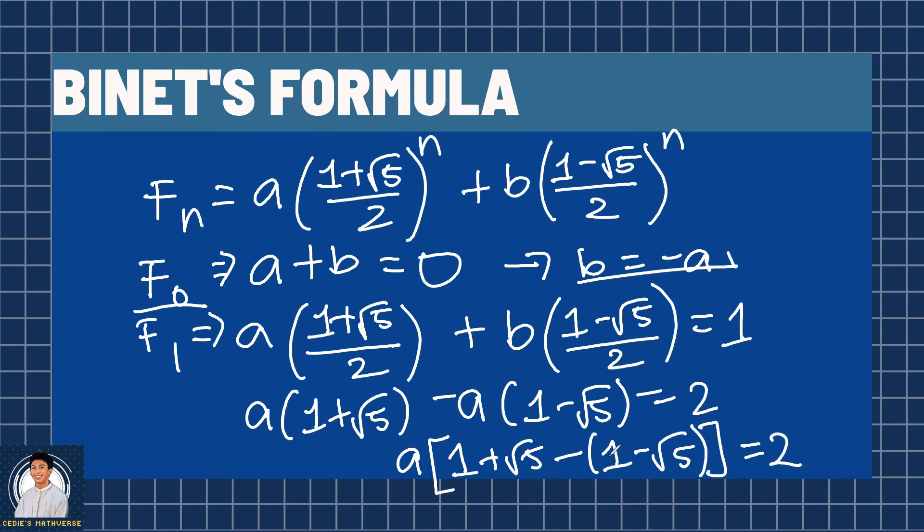We group the a using factoring by grouping. So we have a multiplied by 1 plus square root of 5 minus quantity 1 minus square root of 5. Then we equate it to 2. Finally, this becomes 1 minus 1 is 0. Square root of 5 minus negative square root of 5 is 2 square root of 5. So 2 square root of 5 times a equals 2. And a equals 2 over 2 square root of 5 or 1 over square root of 5. And this is the value of our variable a.